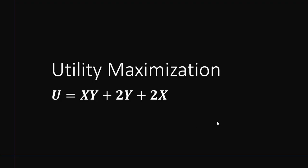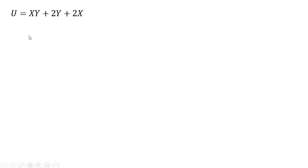We're going to maximize this consumer's utility function subject to a budget constraint. The consumer faces a price of good X equal to $1, price of good Y equal to $2, and the consumer has $18 of income.